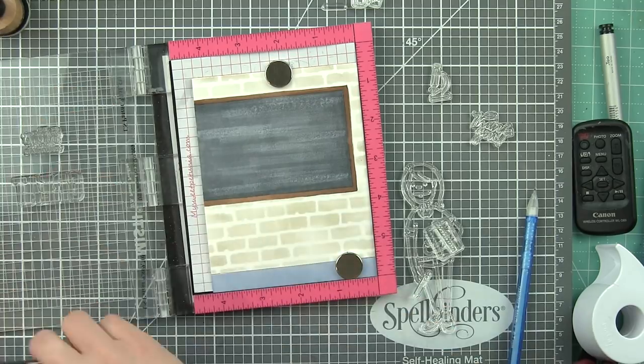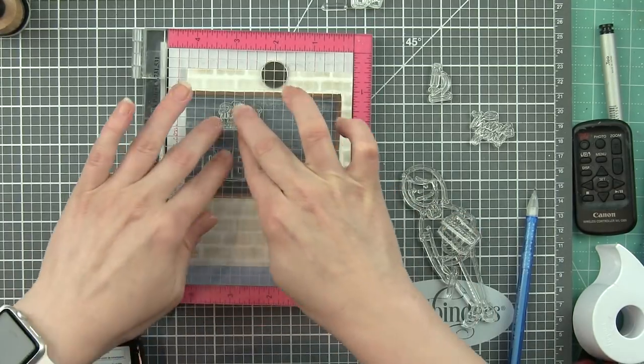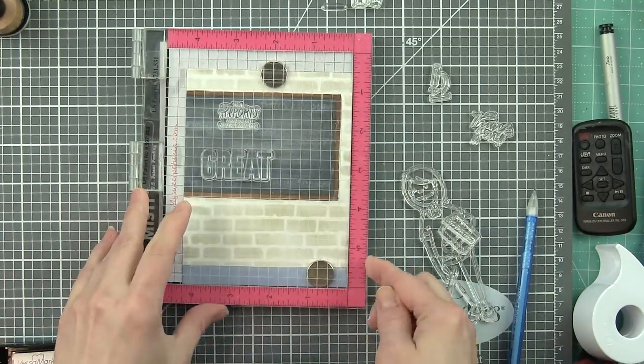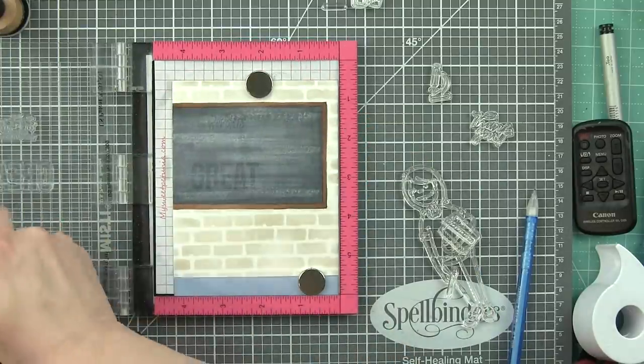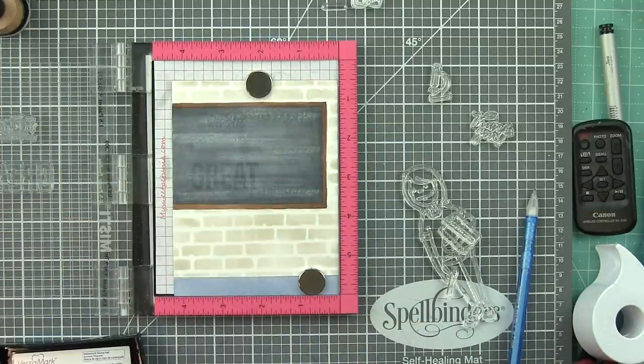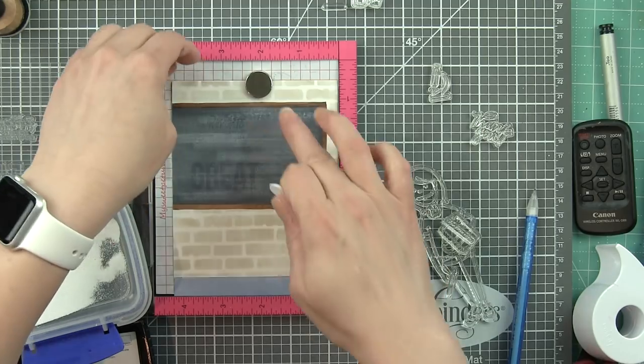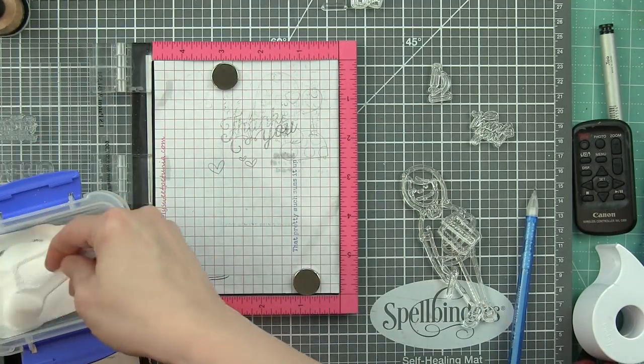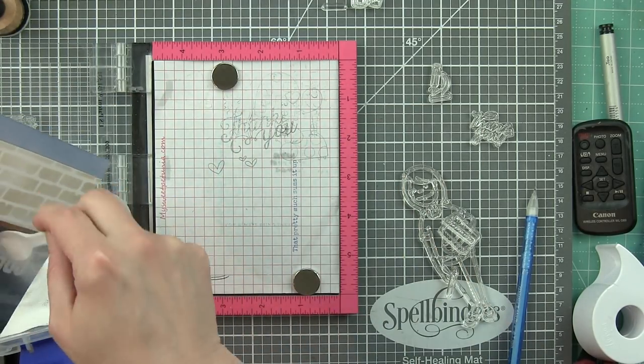We're going to ink these up with Versamark ink, stamp those right on our chalkboard. And then we want to heat emboss with white embossing powder so it looks like this has all been written on the chalkboard. That is definitely the look that I'm going for with this design.